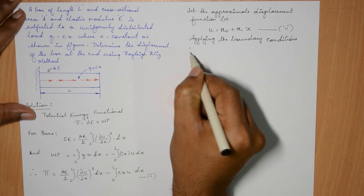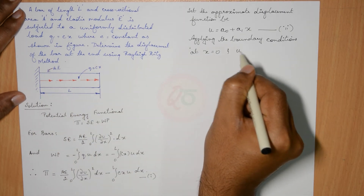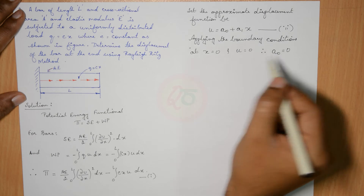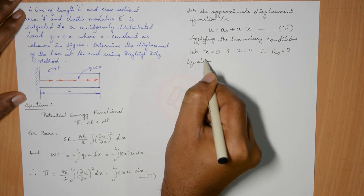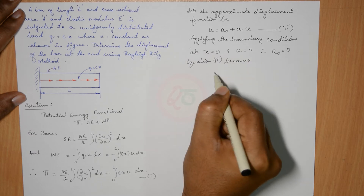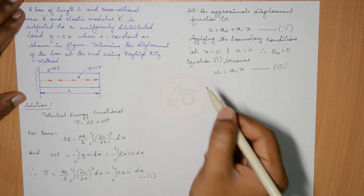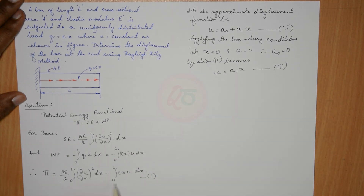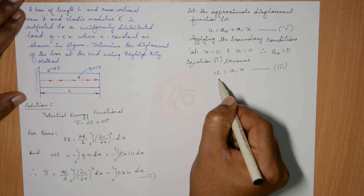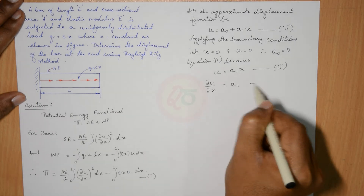Applying the boundary conditions: at x equals 0 (the fixed end), U is 0. Therefore A0 equals 0. Equation 2 becomes U equals A1 x, which is equation 3. Observing equation 1, we need ∂u/∂x. Differentiating U with respect to x partially, ∂u/∂x equals A1. Call this equation 4.